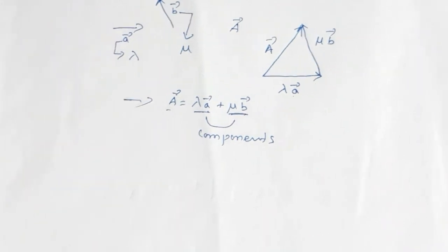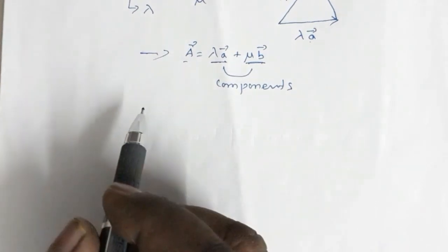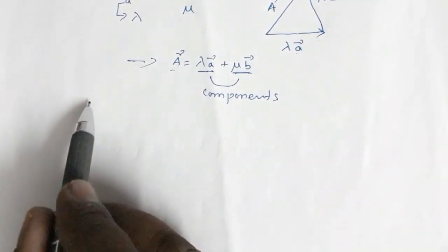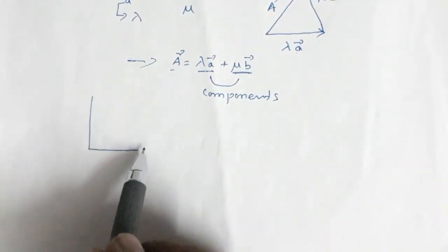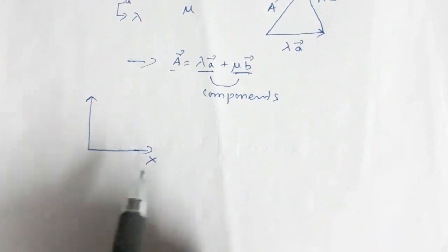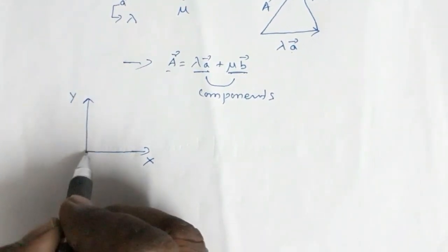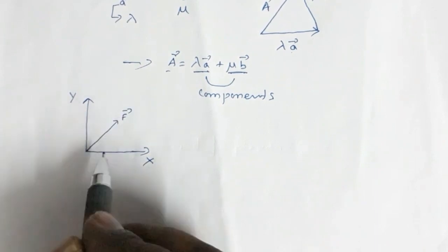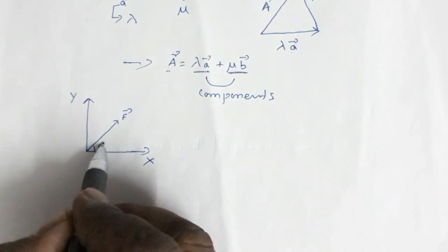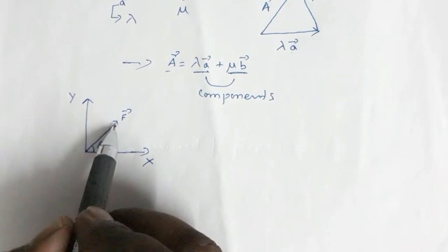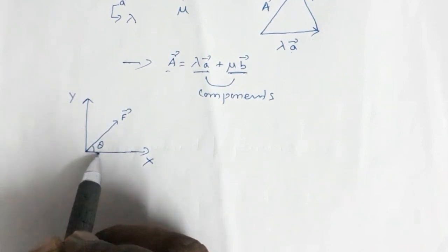Now there is another popular way of resolving vectors — that is resolving the vectors along the coordinate axes. Suppose we resolve a vector in two dimensions. This is the x axis and this is the y axis. Suppose some vector, say a force, is acting at an angle theta with the horizontal axis, which in this case is the x axis. So I can resolve this force into two components: a component along the x axis and a component along the y axis.